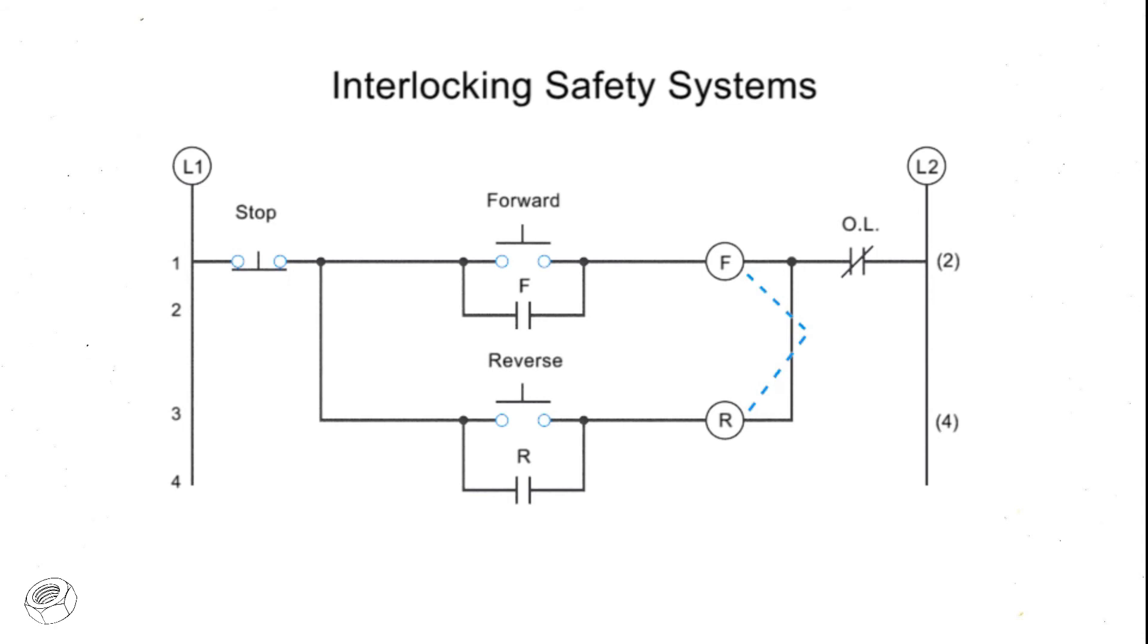The most basic level of interlocking systems is a mechanical interlock. A mechanical interlock is a physical lock that prevents the forward and reverse contactors from being engaged at the same time.